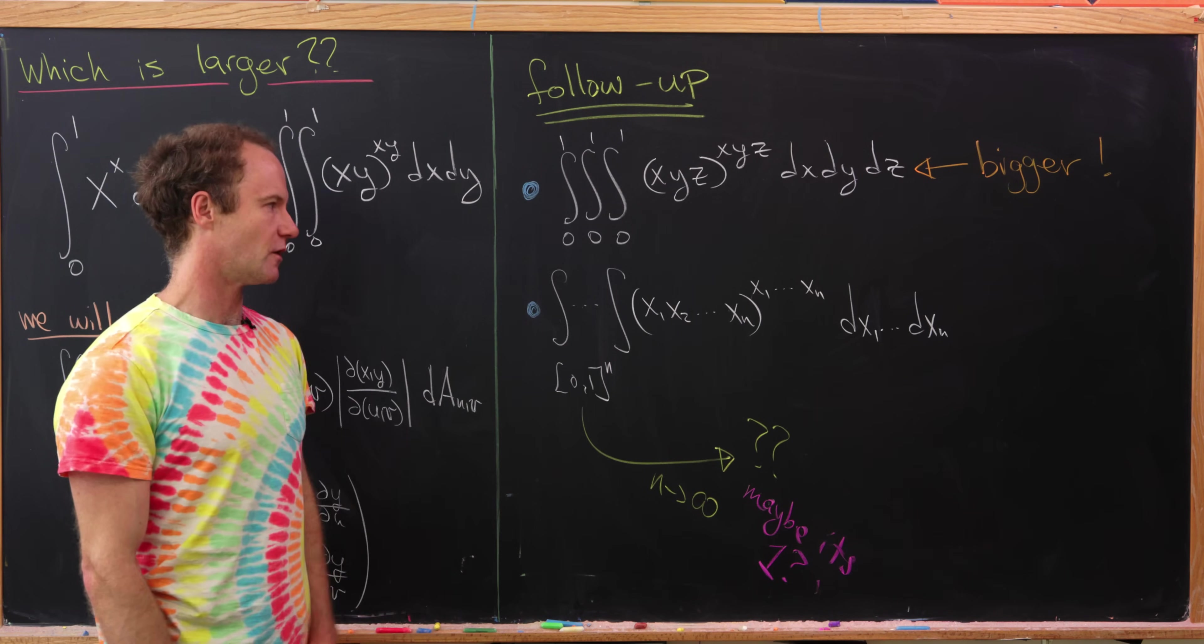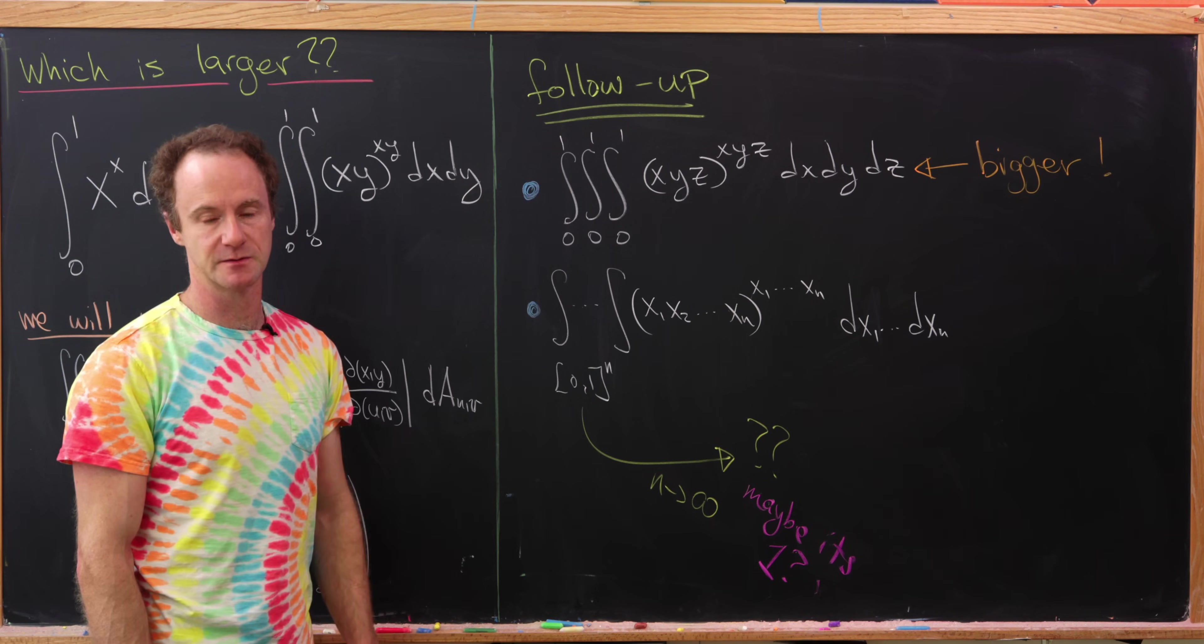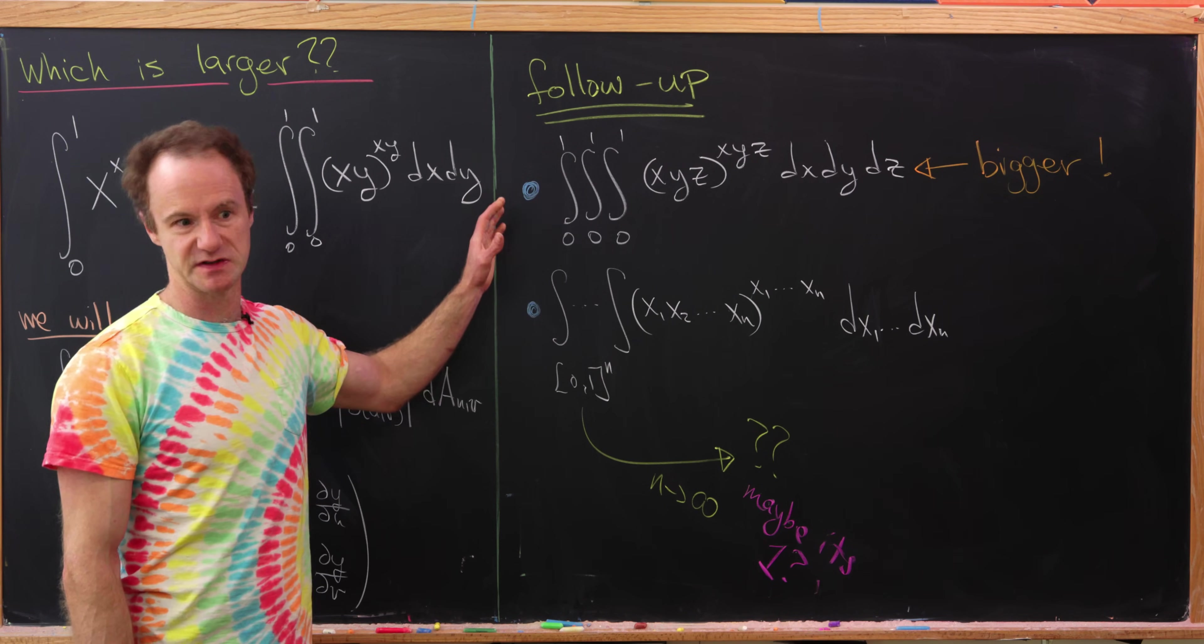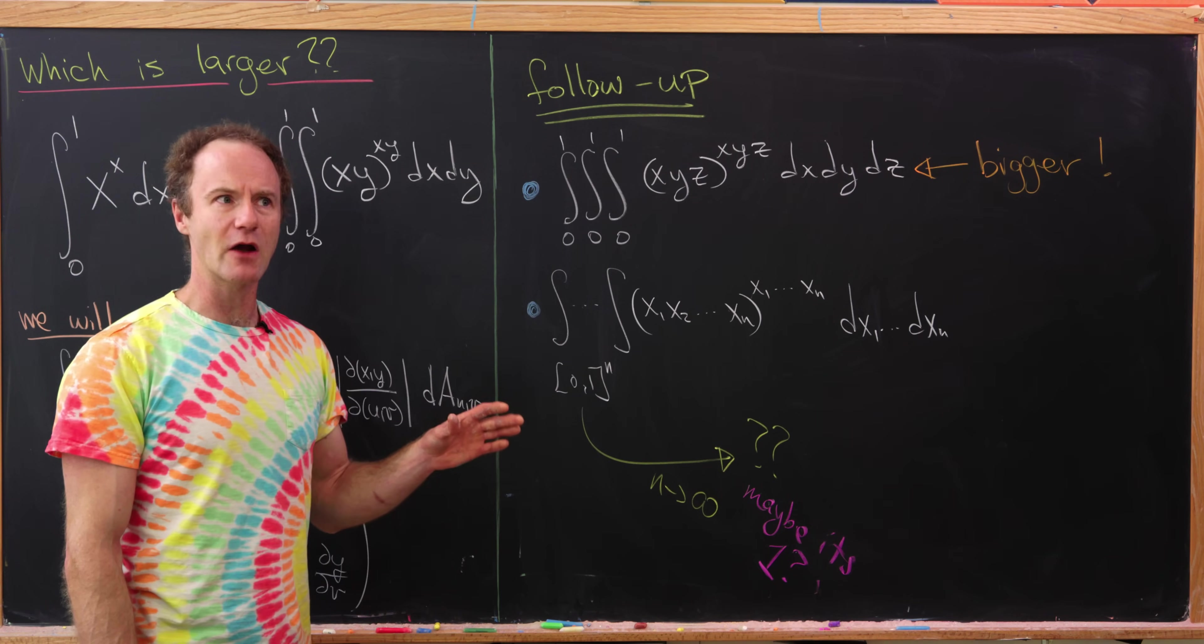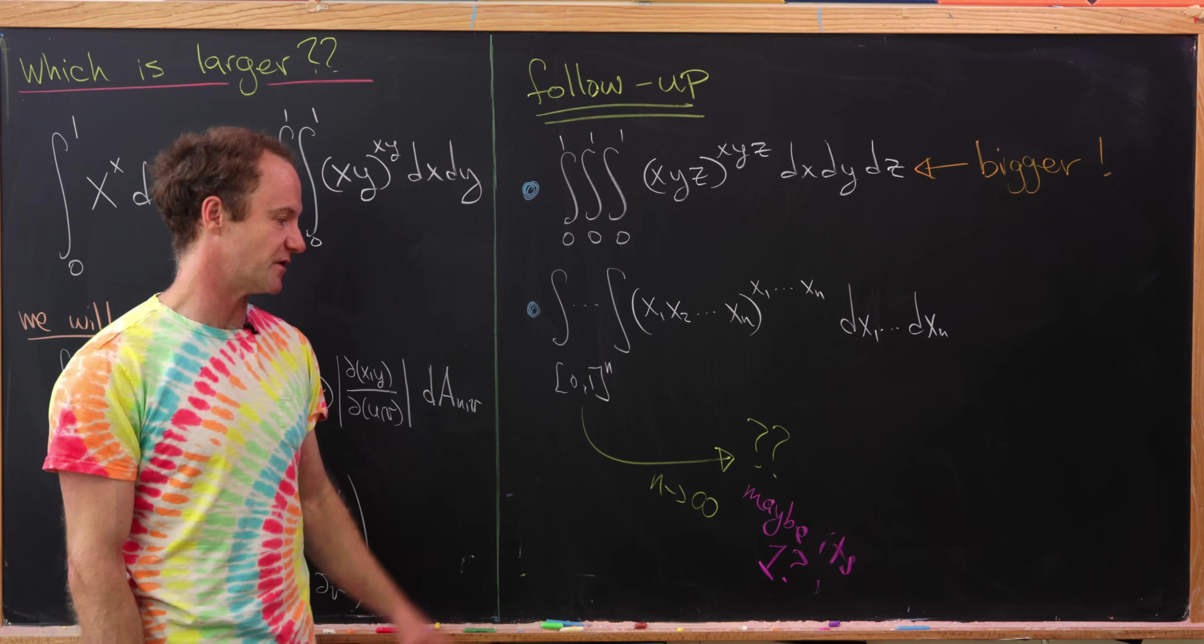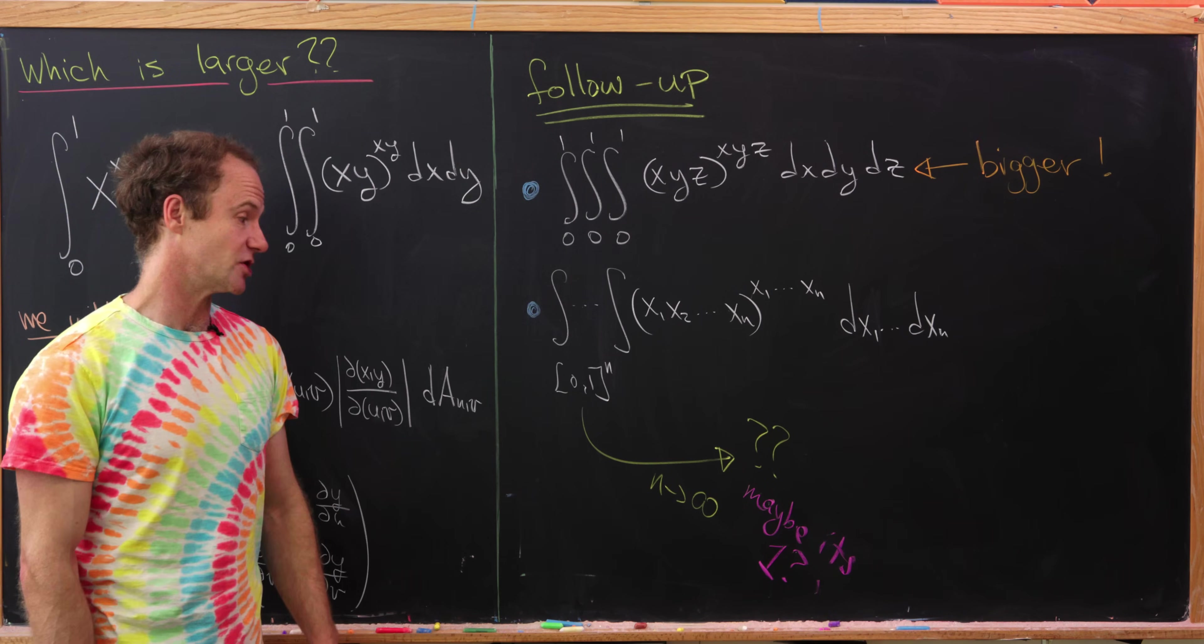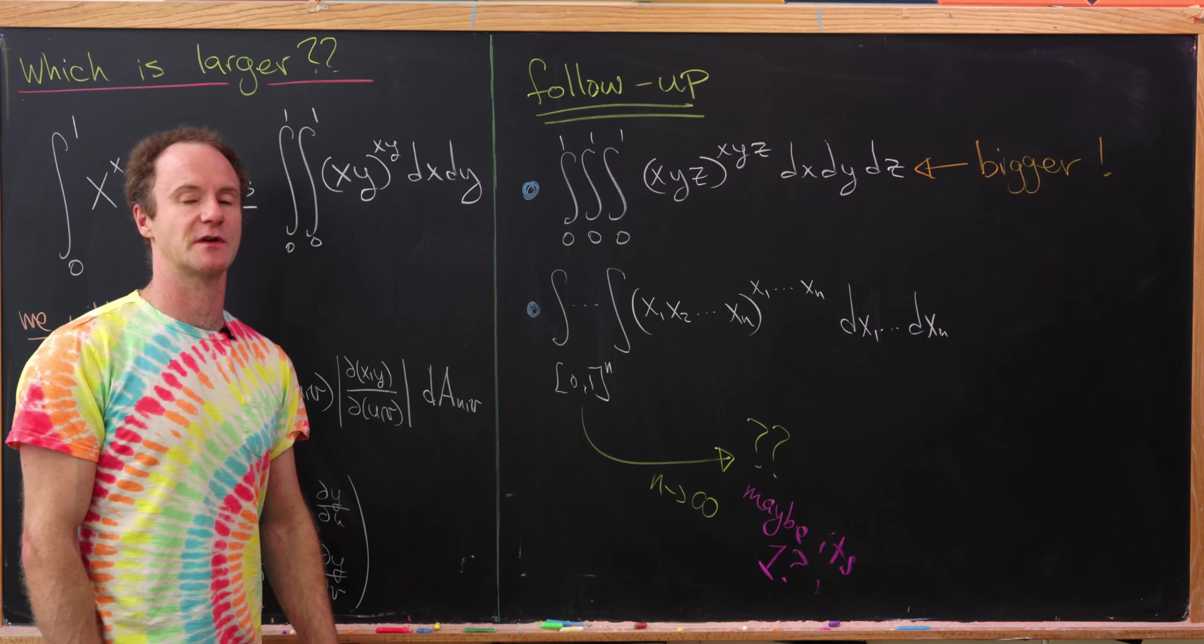And then maybe even a more general follow-up question is, what about the n-variable version of this? So the four-variable version, which I also ran in Mathematica, is bigger than the three-variable version. So it seems to be increasing, at least for a little bit. But then that really brings up maybe the bigger question is, what happens as n goes to infinity? And by some numerical experiments, that seems like it might be correct. But that being said, I didn't go too far. So maybe post in the comments if you try any of these, and anything interesting comes from these.